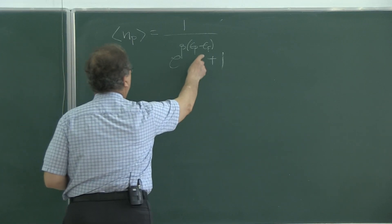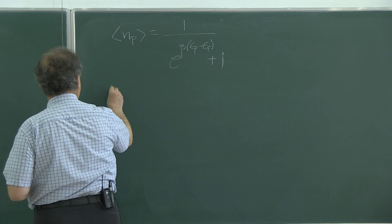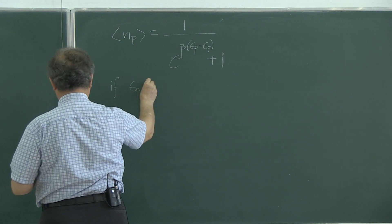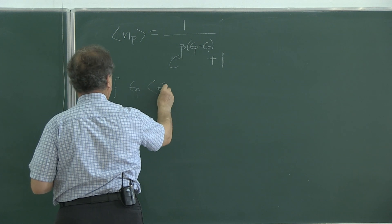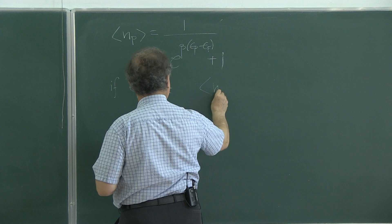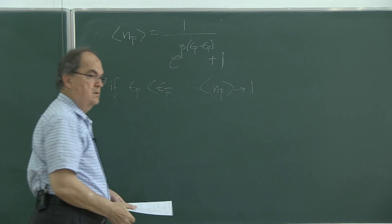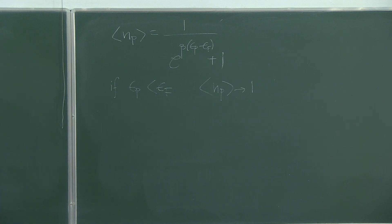Instead of mu, you have Fermi energy. And if particle energy is smaller than Fermi energy, what happens? This turns into 1. If you are looking at states with smaller energies than Fermi energy, they are all occupied. Occupation number is 1.